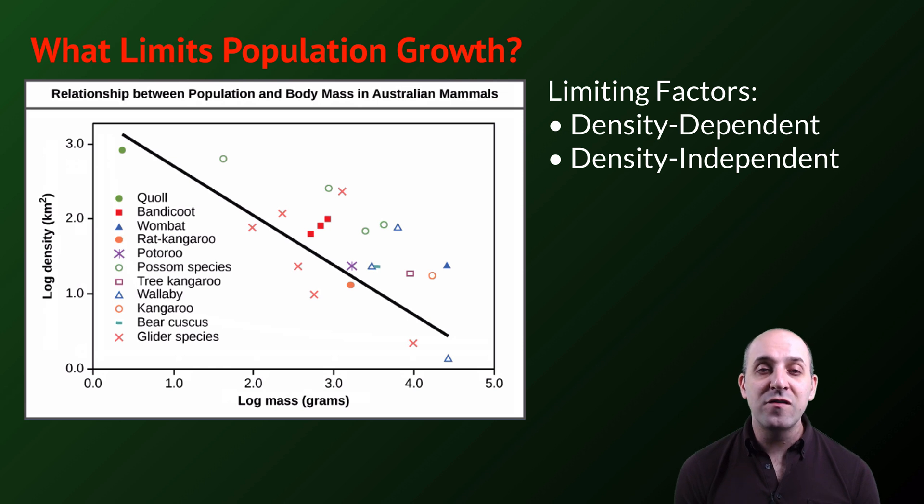There are also density-independent limiting factors. These are factors that have a limiting effect on a population regardless of the number of individuals in the population. This graph is showing the relationship between the density of a population, which you can see on the y-axis, and the size of the organisms that we're talking about. The larger the organisms are, the lower the density of the population of that organism in the environment. It doesn't matter how many individuals of the population there are in the environment. It's simply a function of the size of the individuals themselves. That's a density-independent factor. Together, density-dependent and density-independent factors are contributing to the carrying capacity for a particular population in its environment.